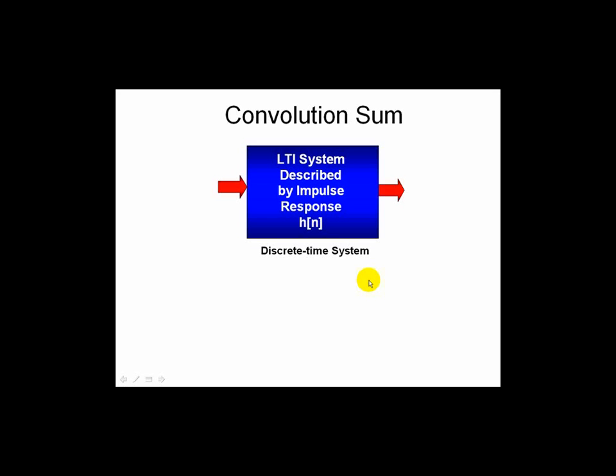Let's quickly look at the convolution sum. Here we have a discrete time system described by h sub n, where h sub n is the impulse response.